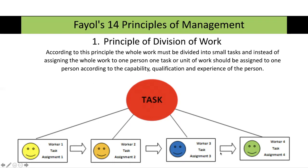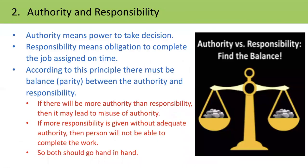The next principle is Authority and Responsibility. Authority means the power to take decisions. Responsibility means the obligation or duty to complete the task on time. This principle says there must be a balance between authority and responsibility. If there is more authority than responsibility, there will be misuse of authority, and the person will not be able to complete the work. Both should go hand-in-hand — they must be equal.